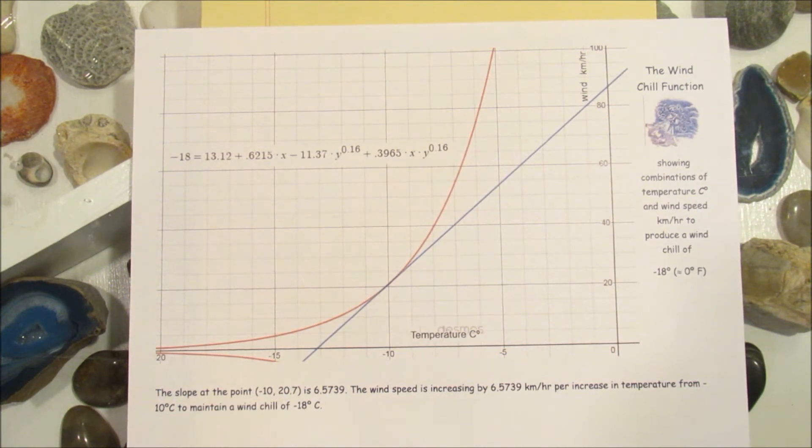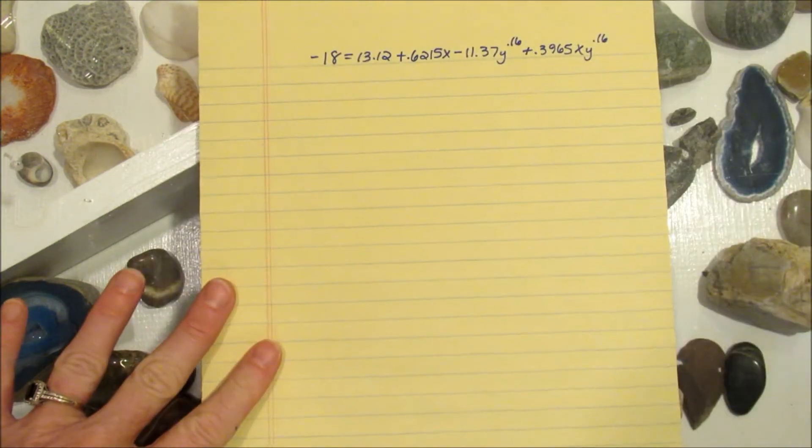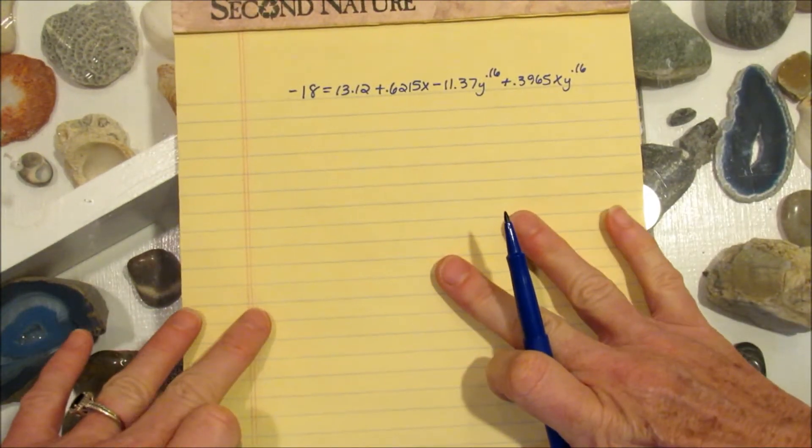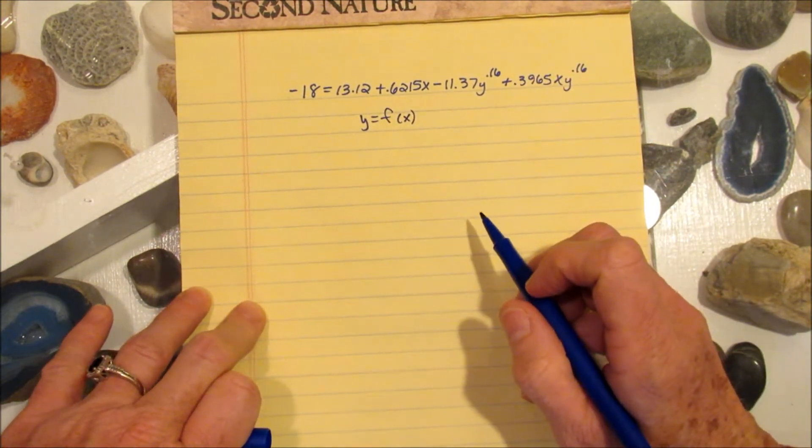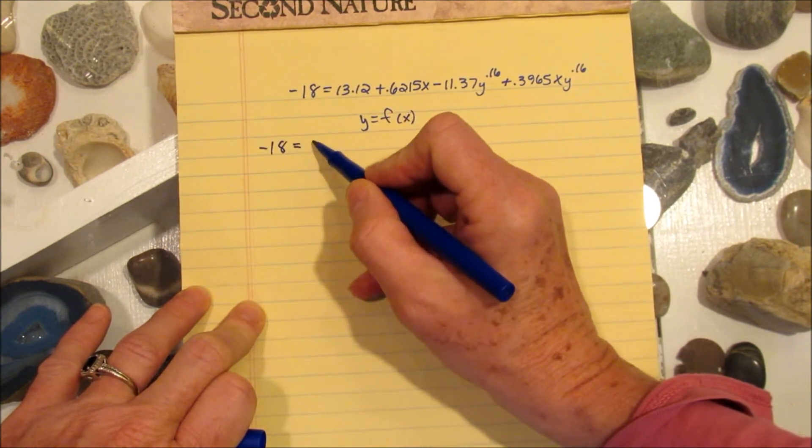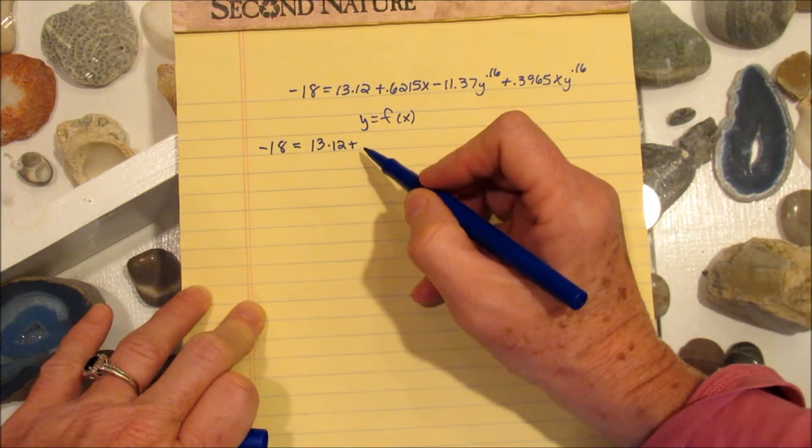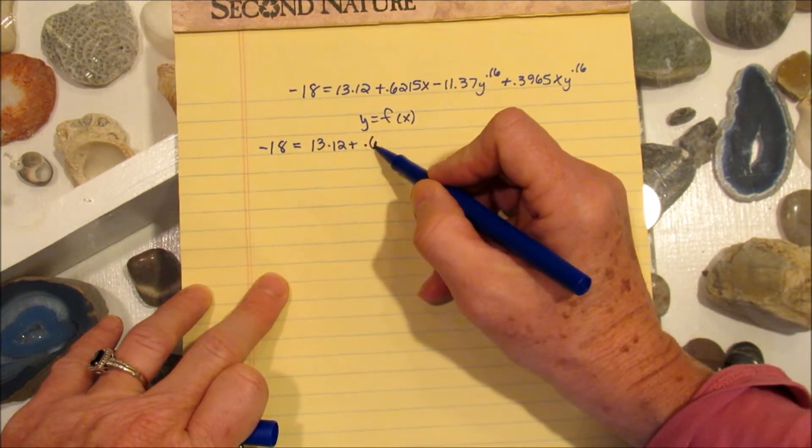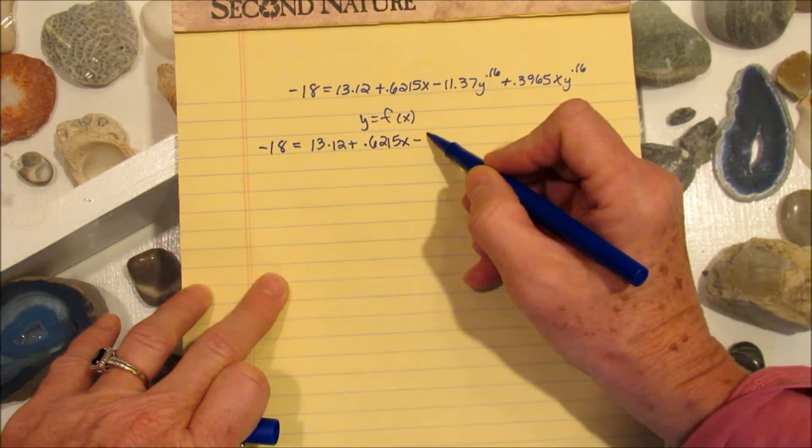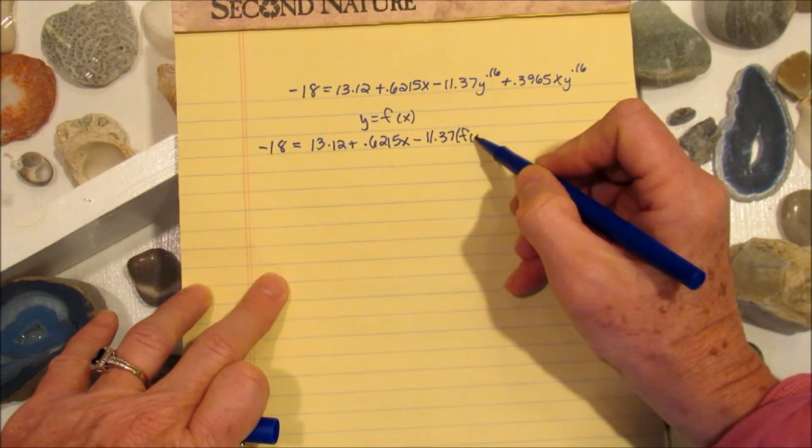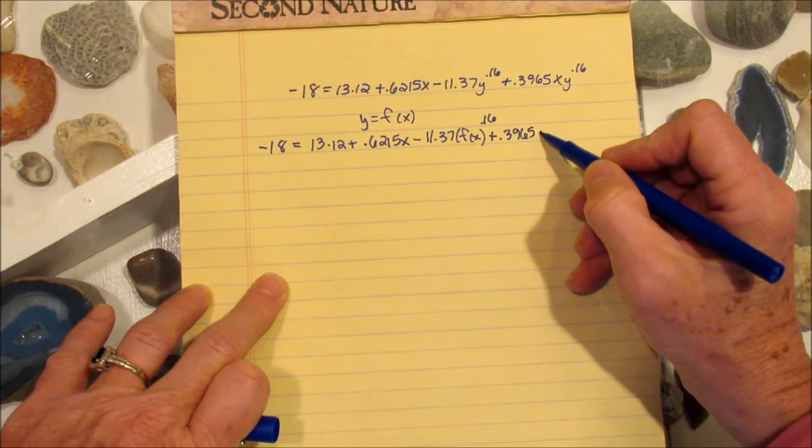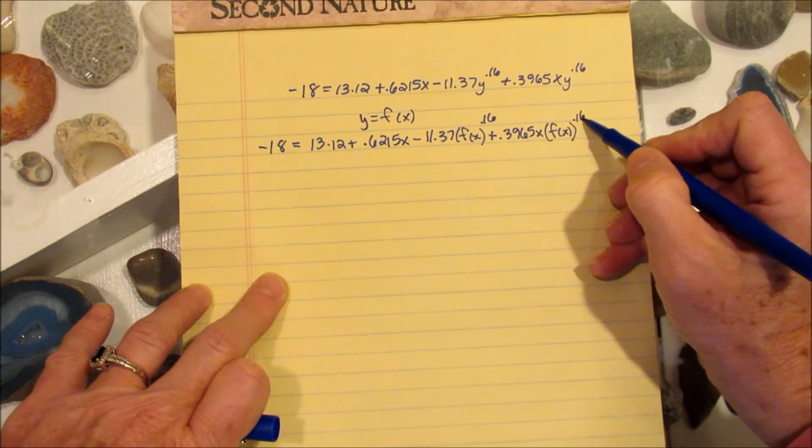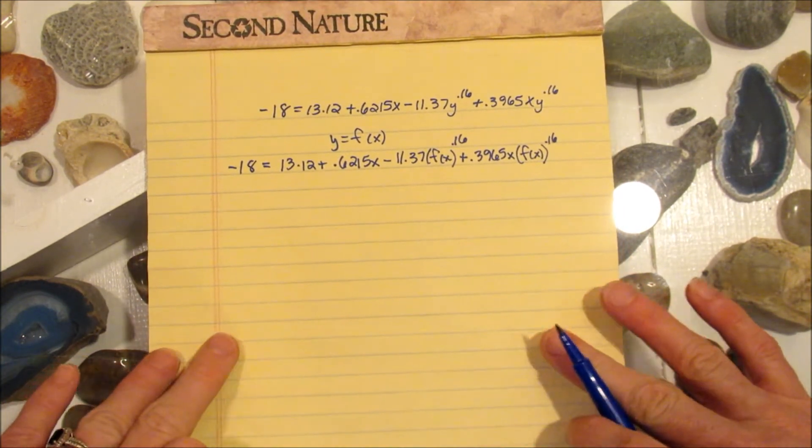One of the variables has to be looked at as a function of the other. So we're going to go with y being a function of x. We're still going to follow all the same rules of derivatives that we always have, but we're going to remember that y is a function of x. I will replace y with f of x in the formula for starters. So negative 18 equals 13.12 plus 0.6215x minus 11.37 times f of x, and that's raised to the 0.16 power, and then plus 0.3965x, and then y is a function of x, and that's raised to the 0.16 power.